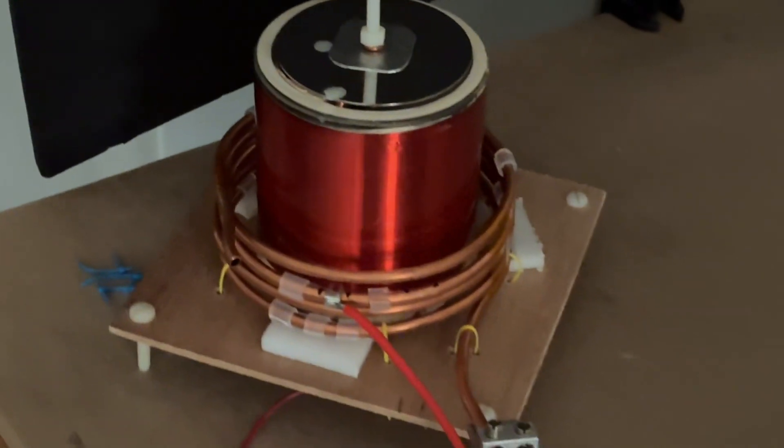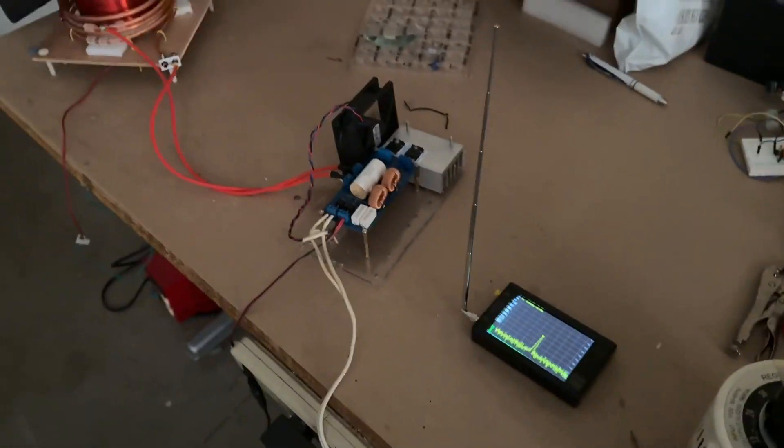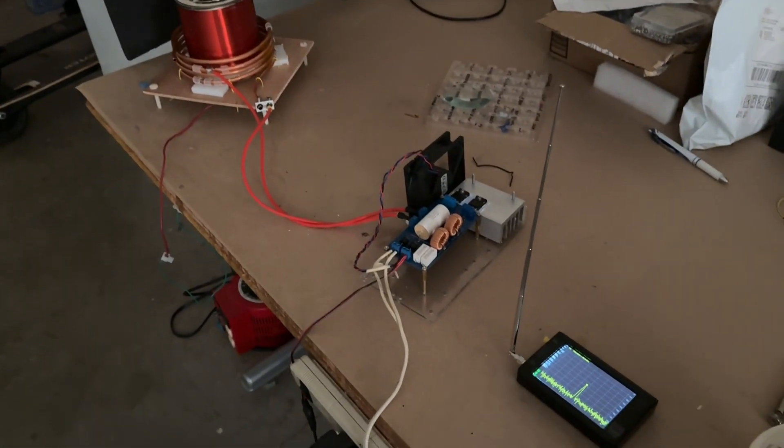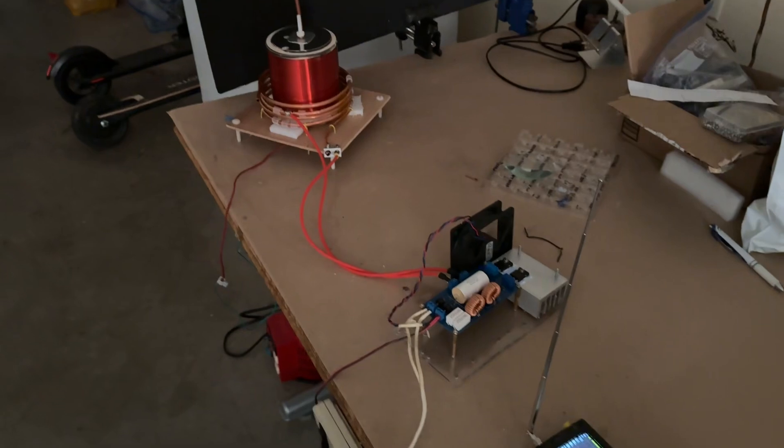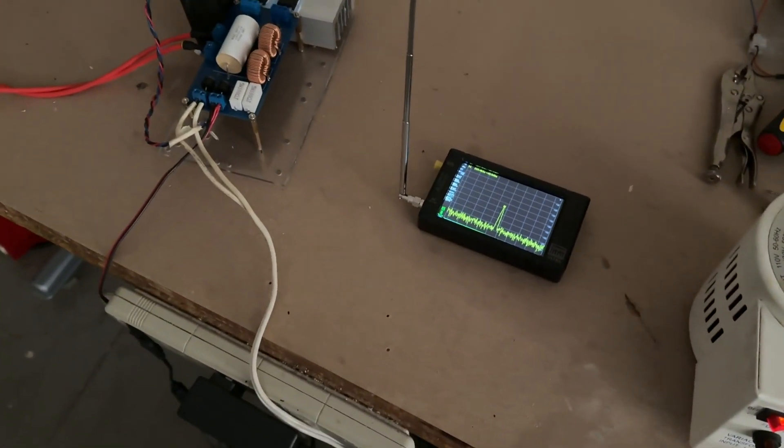You can see this on the frequency analyzer. Now what we're going to do is add power from a variac. We're going to slowly turn up the power level and see what happens to the spectrum. It's quite sharp at the moment at 253 kilohertz.